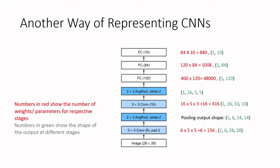Here is another representation of LeNet. This type of representation is very convenient and often used to discuss convolutional neural networks. Starting with a 28 by 28 image, it goes through convolution with six 5 by 5 filters and padding of 2, then average pooling with stride 2, followed by more convolution stages. The numbers in red indicate weights or parameters per stage, and the numbers in green show the output shape at different stages.